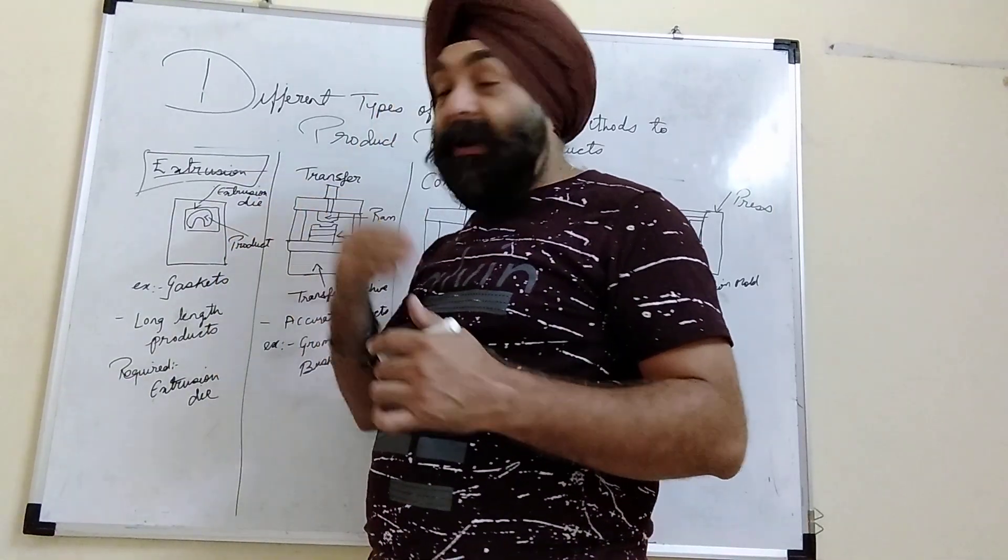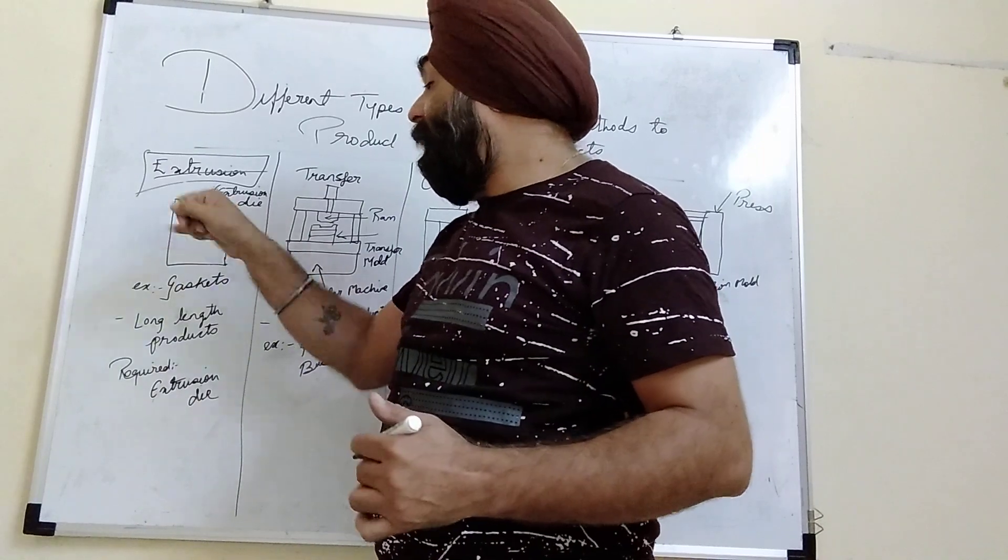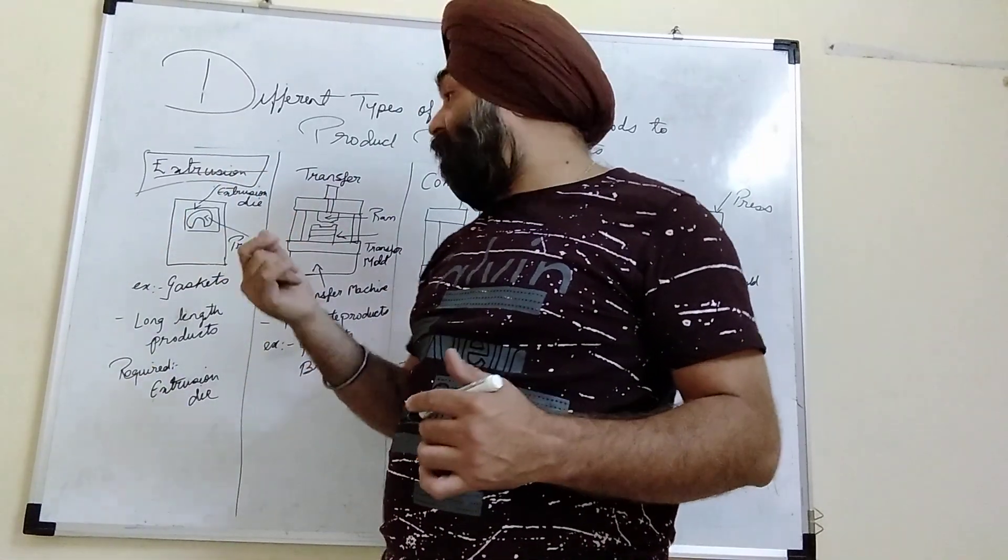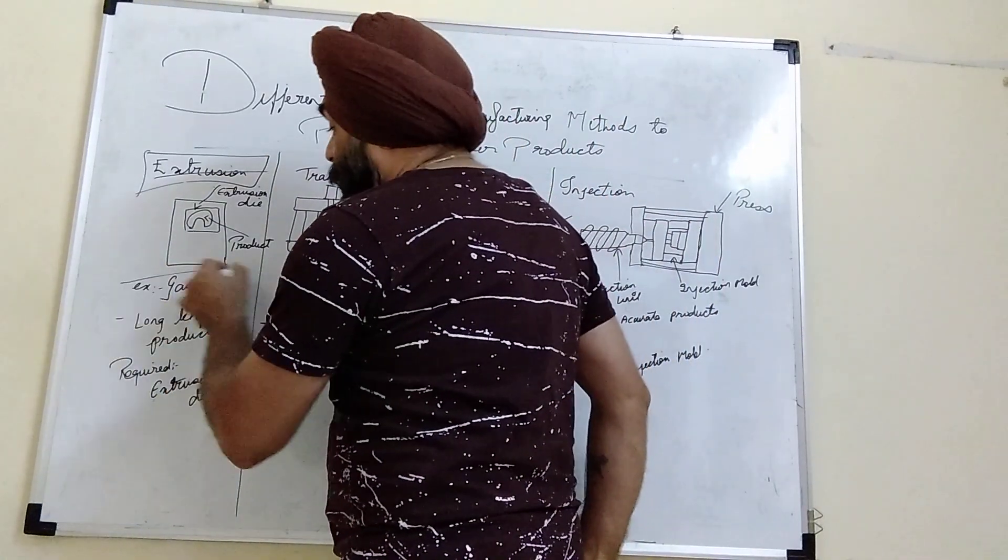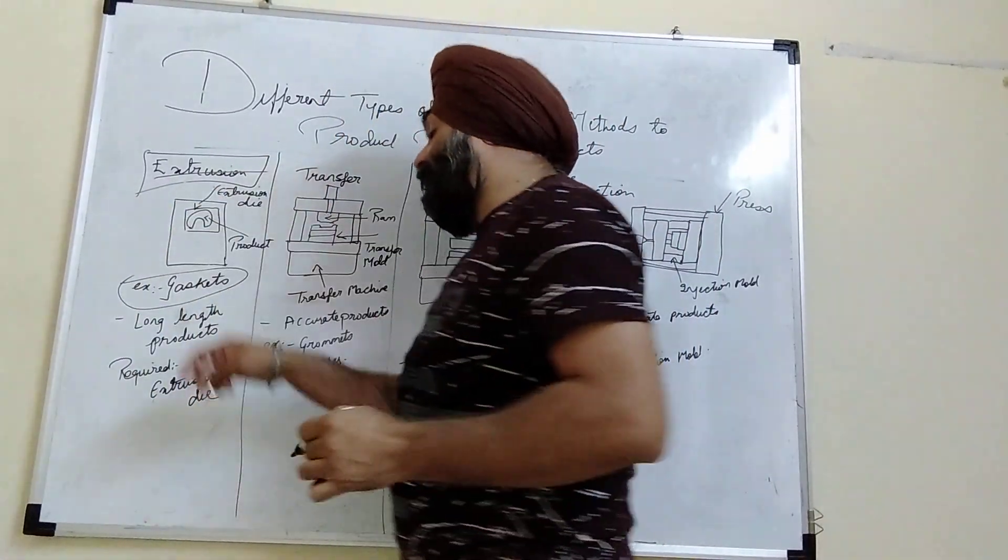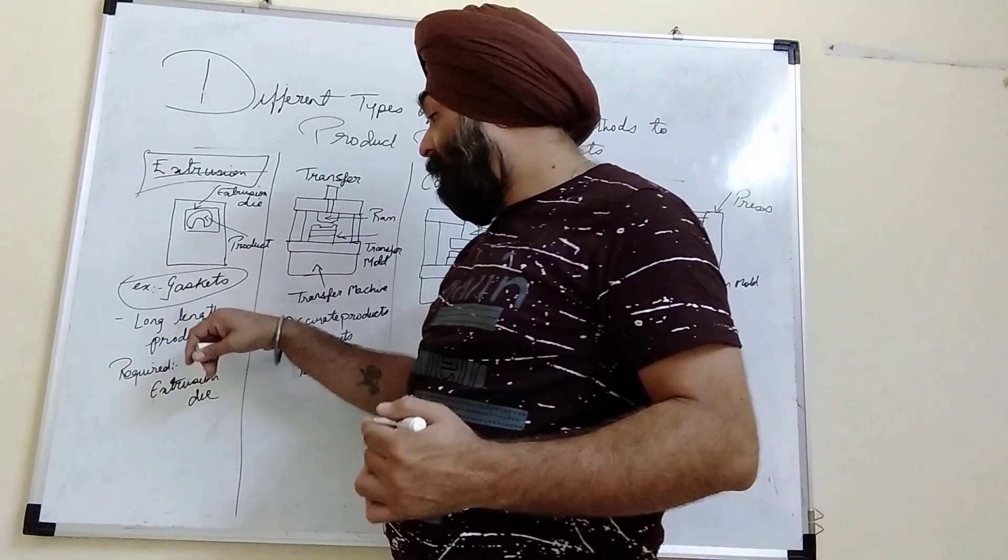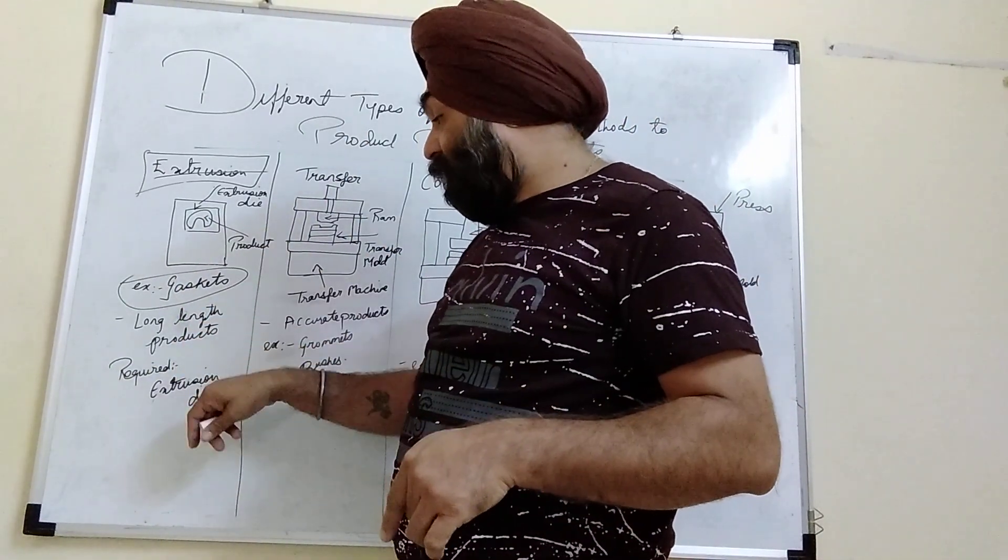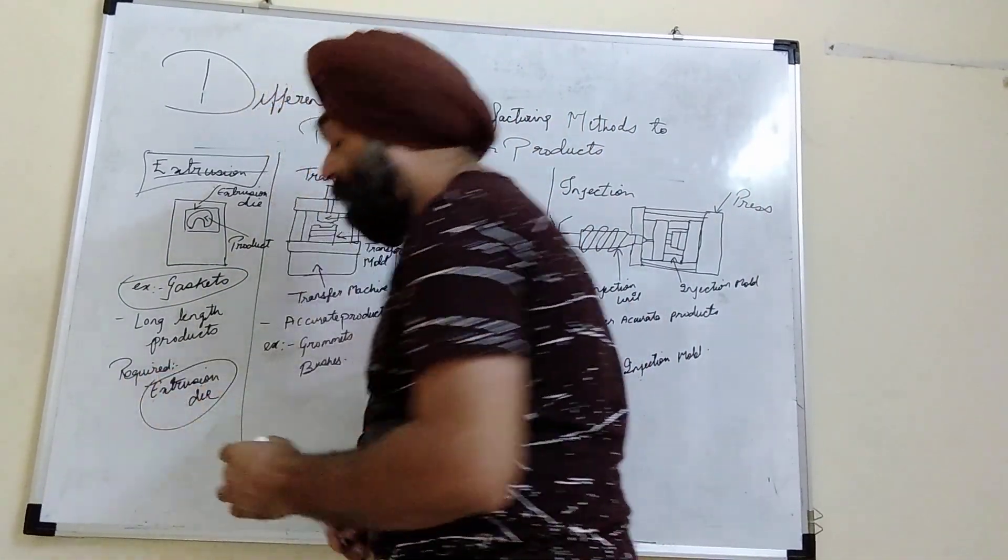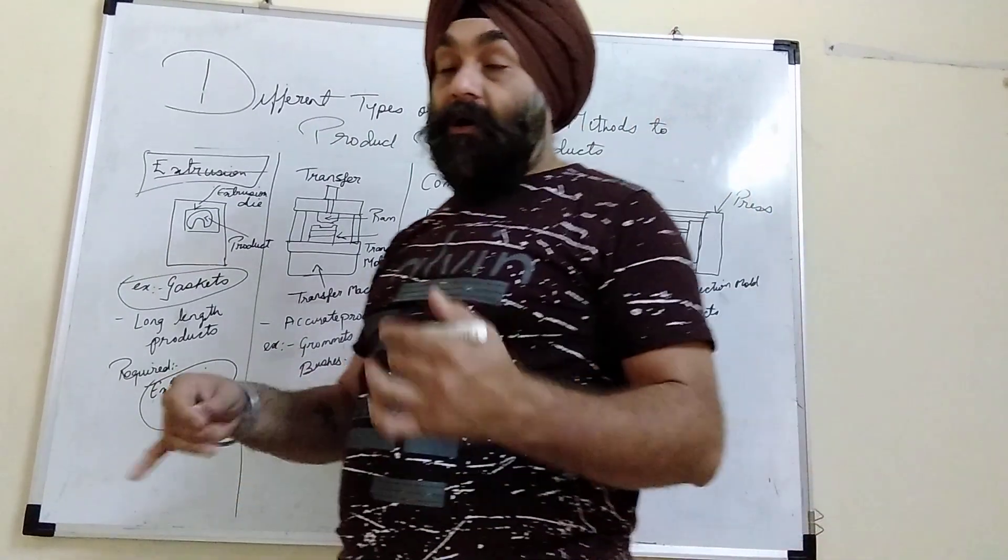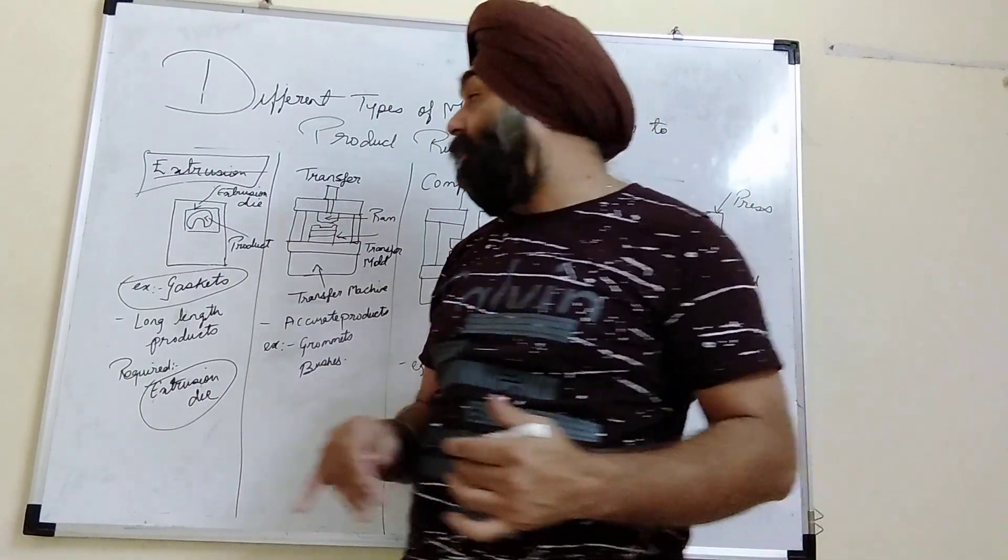With that opening, pre-heated rubber is forced from the backside with a ram, and then you get a product which you can cut according to the length. A very good example of extrusion die is gaskets or anywhere where sealing is required on long length parts. I will cover extrusion die separately in a dedicated video.